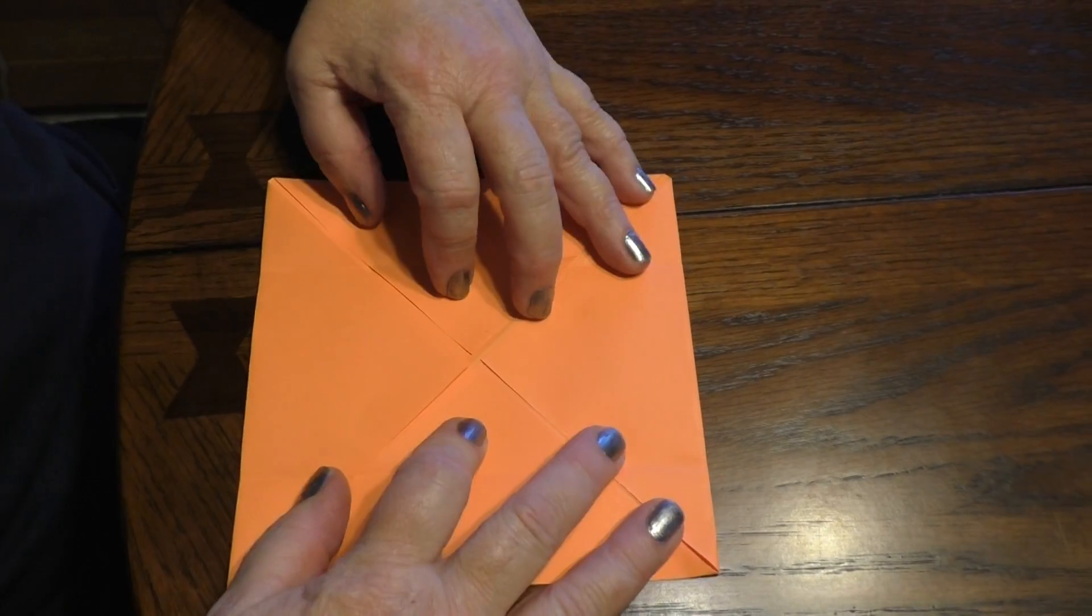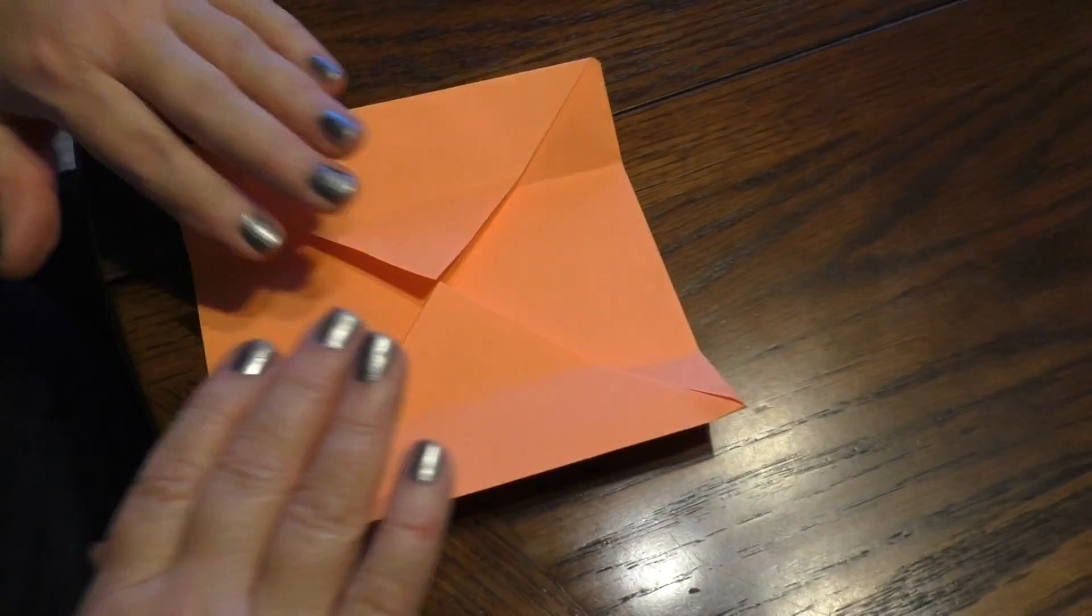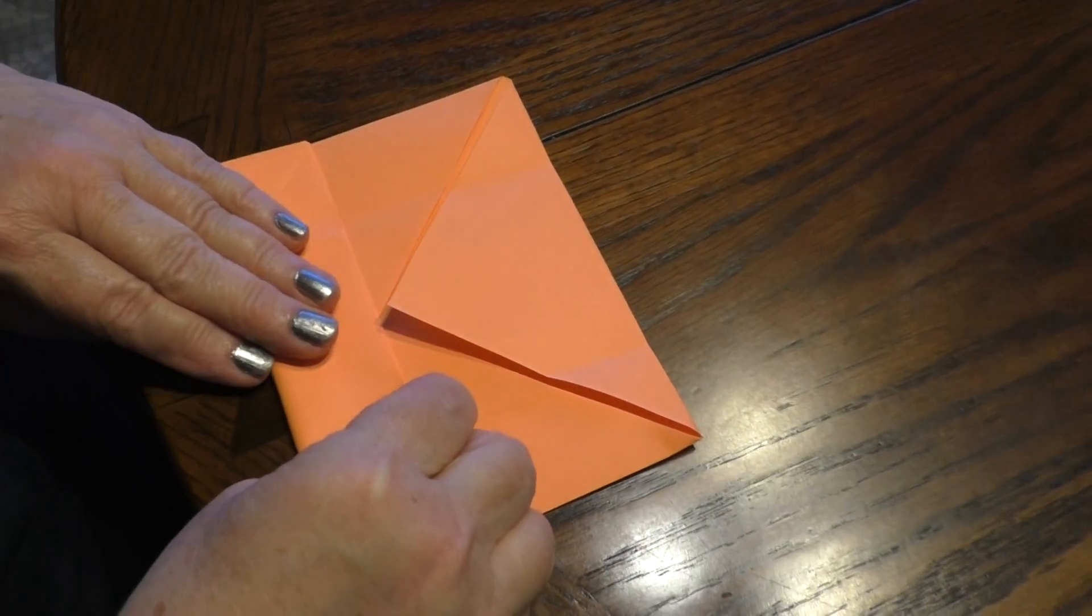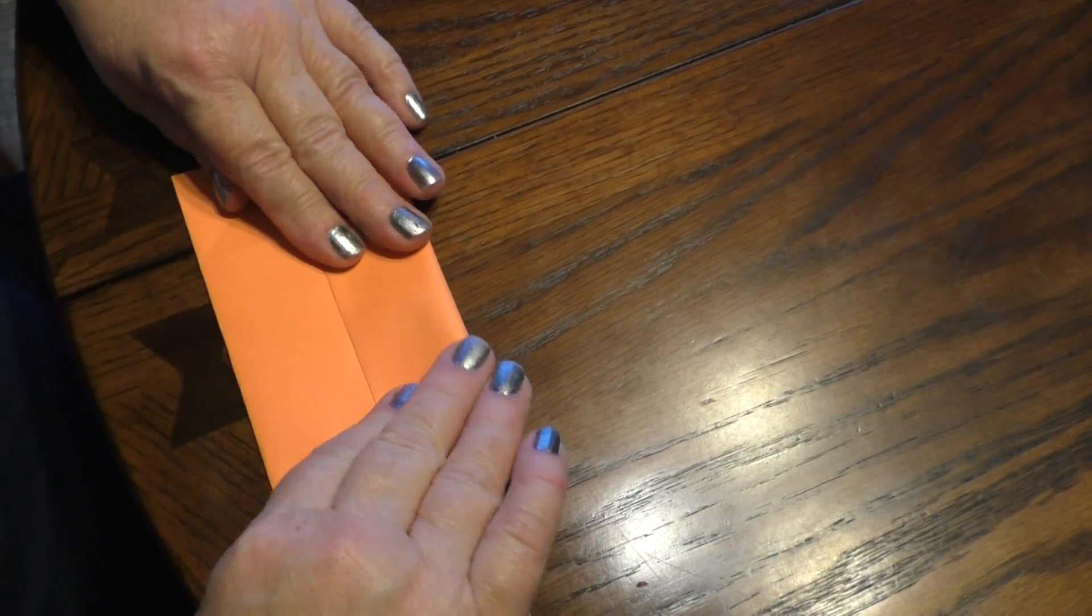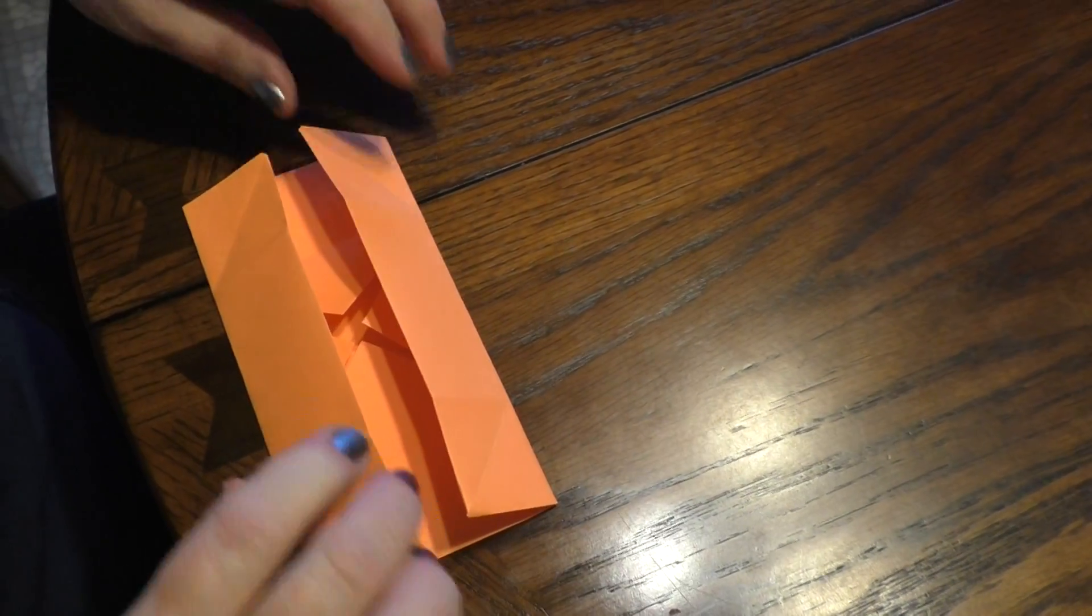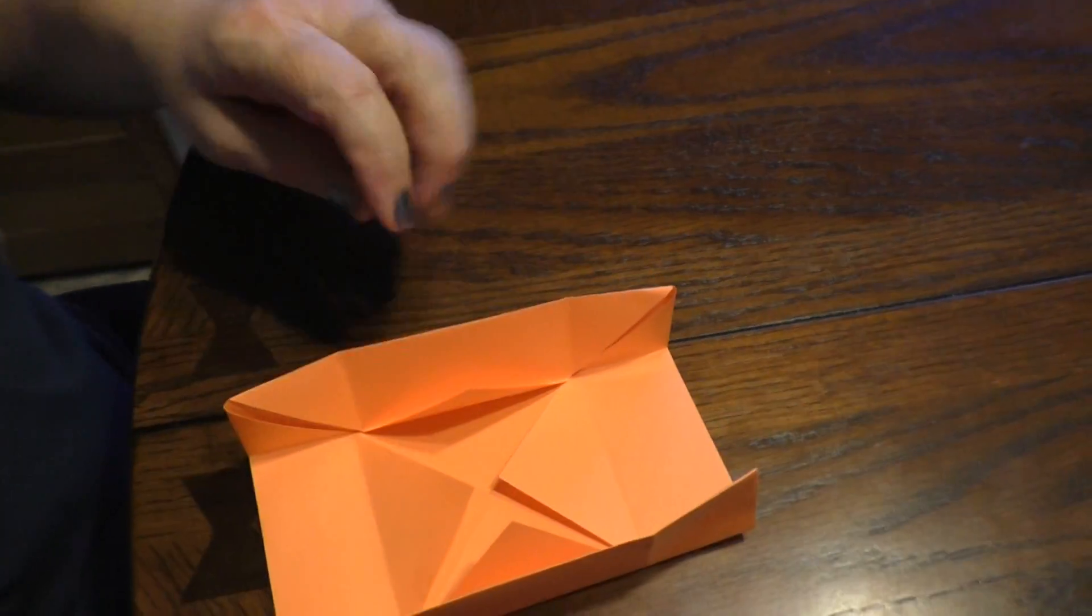Now, we're going to try it on this side. Push it all back down. Go to the middle. Go back to the center. And if you notice, there's a little square. That's what you want, this square with the X going through it.